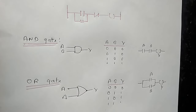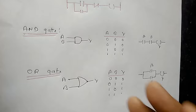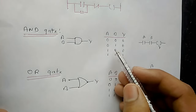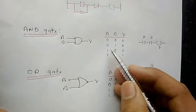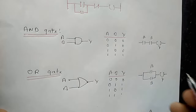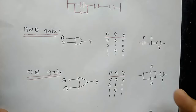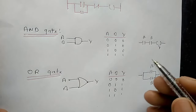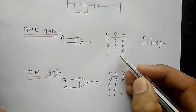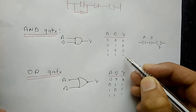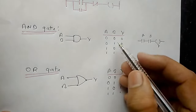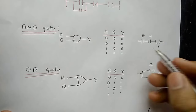Now let's implement logic gates with the ladder diagram. This is the AND gate — this is a logic diagram and this is the truth table. For the AND gate, when all inputs are true then the output will be true. This is the corresponding ladder diagram.